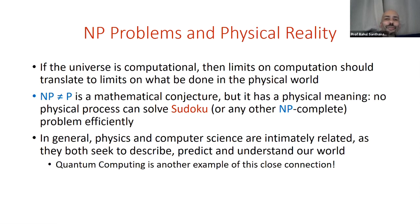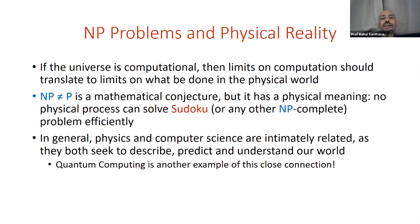Just to finish on an intriguing note: quantum computing, which some of you might have heard of, is another example of this close connection. The computers we build are based on the laws of classical physics, but there are strong indications that the laws of physics are really quantum, not classical. Can we exploit this to solve computational problems faster? That's the subject of a completely different talk, but I think it's a good way to end. Thank you.